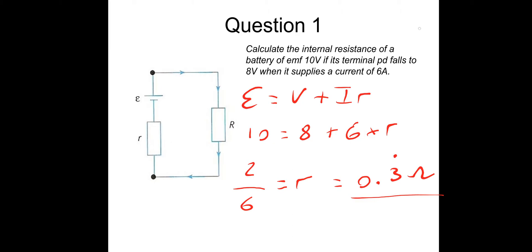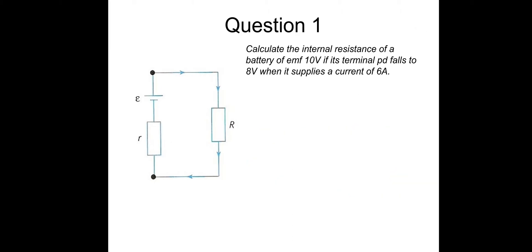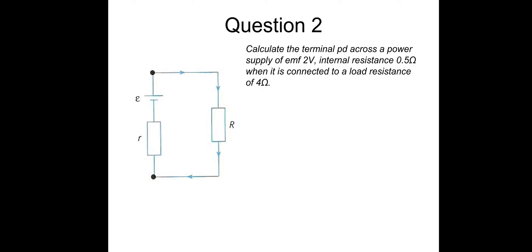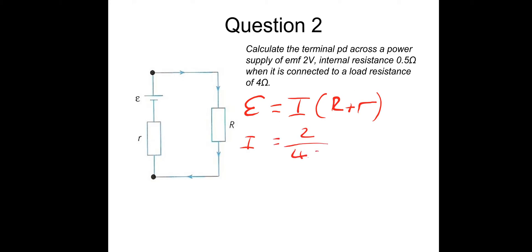Question 2: calculate the terminal PD across a power supply of EMF 2 volts if the internal resistance is 0.5 ohms when connected to a load resistance of 4 ohms. First we need the current: EMF equals I(R + r), so current equals EMF divided by total resistance: 2 divided by 4.5 ohms, giving a current of 0.4 recurring amps.